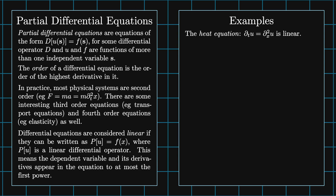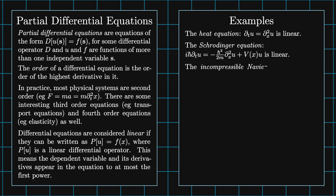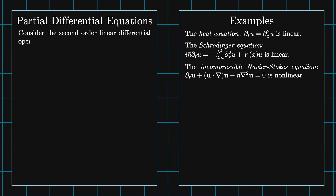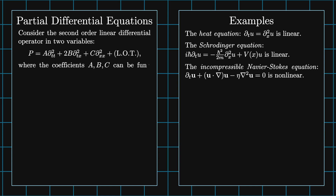The heat equation DT U equals DX squared U is linear. Likewise, the Schrödinger equation I H bar DT U equals minus H bar squared over 2M times DX squared U plus V of X times U is also linear. The incompressible Navier-Stokes equation DT U plus U dot the gradient of U minus eta times the Laplacian of U equals zero is nonlinear because U appears twice in the second term. Consider the second order linear differential operator in two variables: P equals A DT squared plus 2B DT DX plus C DX squared plus lower order terms, where coefficients A, B, and C can be functions of T and X.